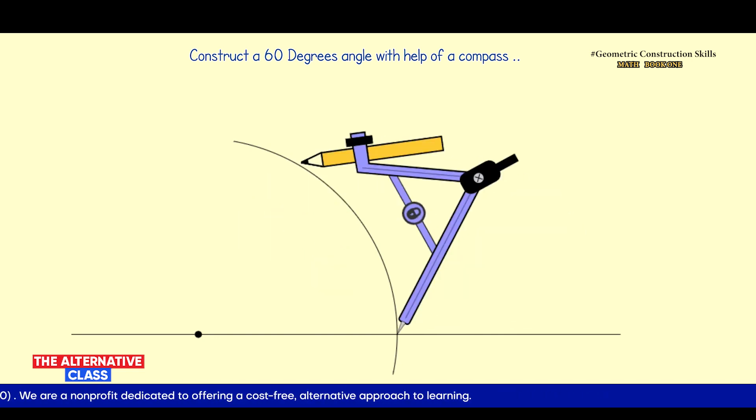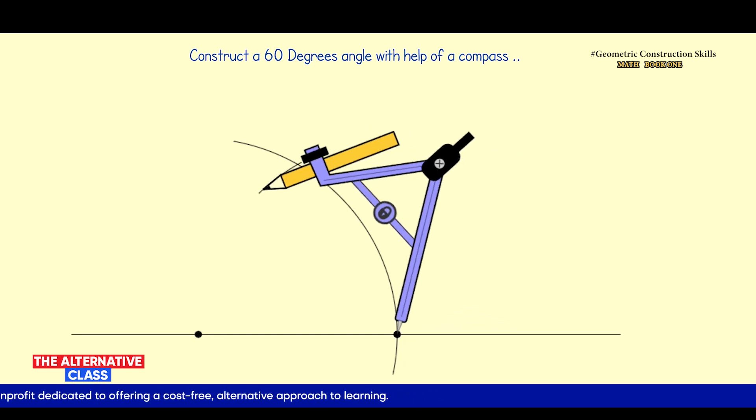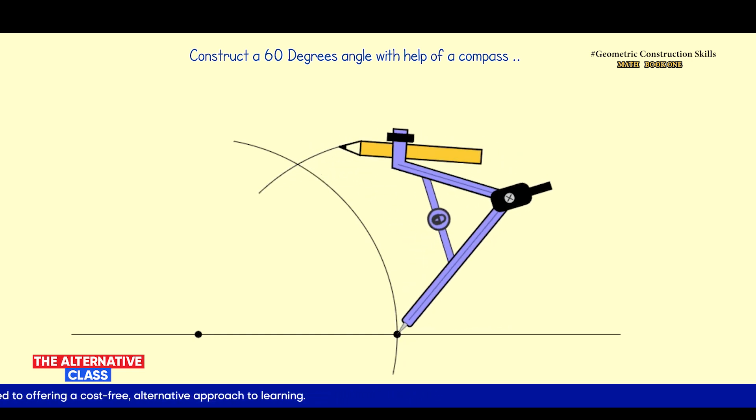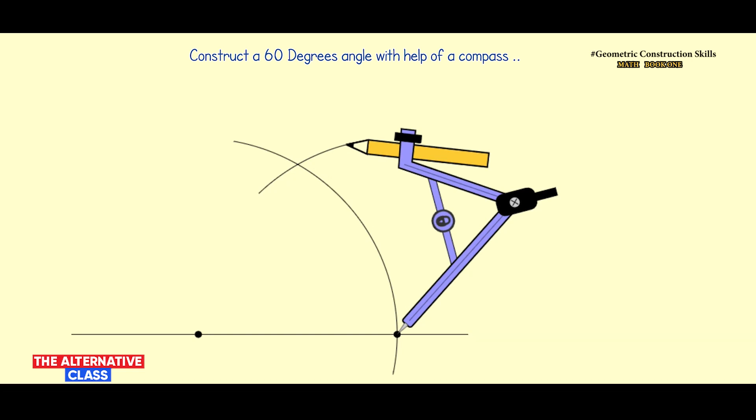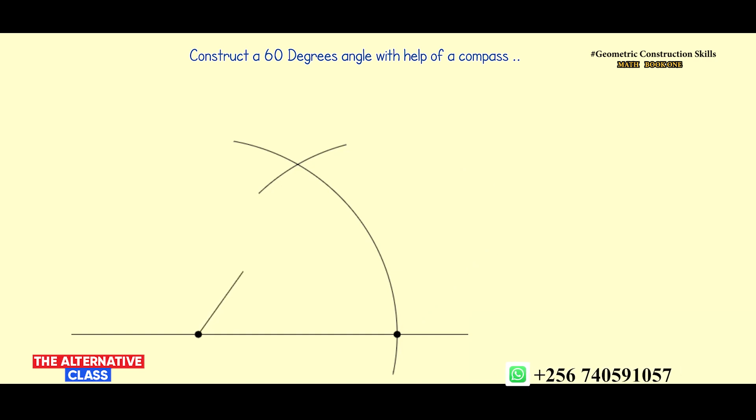Then we draw an arc above the line. You can see that this second arc is going to cut or meet our first arc. At the point of intersection of these two arcs, we are going to draw a straight line.